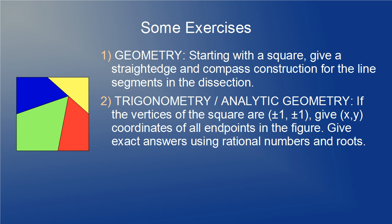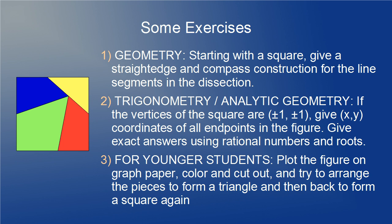Notice that this is not the unit square. It's a square with side of length 2. I'm doing it this way because I think it's good to have symmetry about the origin and to have the vertices of the square on the coordinate grid. Finally, for younger students, or students of all ages really, plot the figure on graph paper, color and cut out, and try to arrange the pieces to form a triangle and then back to form a square again. It's a little puzzle that's not that easy.